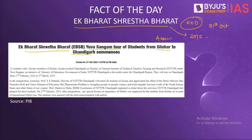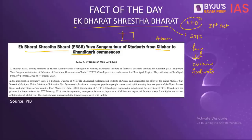Under this scheme, various states and union territories are paired with each other for a time duration, during which they carry out structured engagement in spheres of language, literature, cuisine, festivals, tourism, and cultural events. The paired states or union territories sign MOUs with each other, defining a set of activities they will carry out throughout that duration after conducting mutual consultation. This scheme helps in increasing interaction between different states and ultimately strengthens the unity of the country.